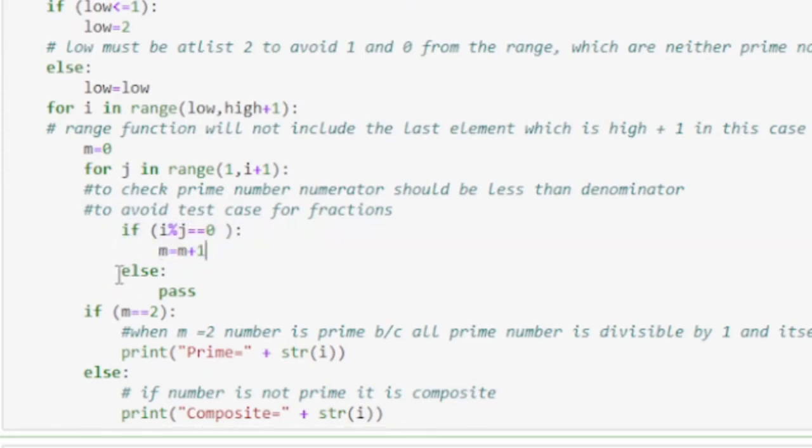Modulus is used to return the remainders. If m equals equals 2, print the number as prime because all prime numbers are divisible by 1 and itself. So m equals 2 for prime numbers.